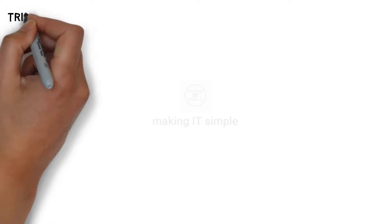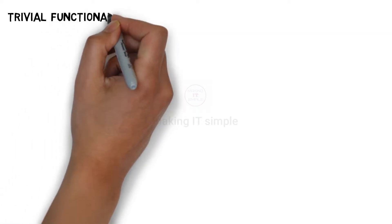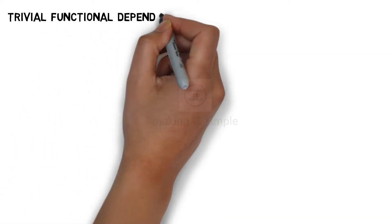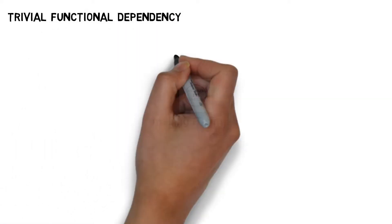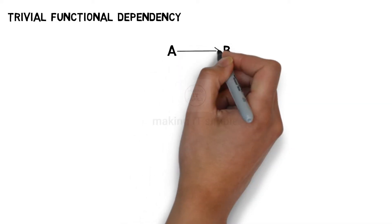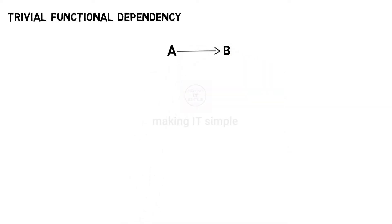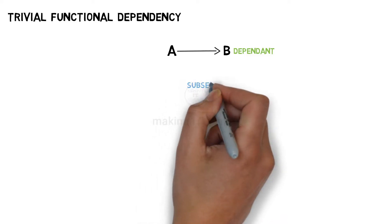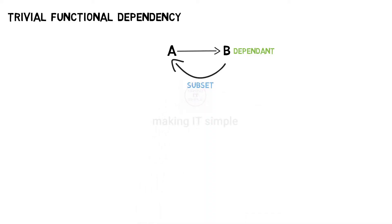Let us start with the first type: Trivial Functional Dependency. Consider a Functional Dependency A determines B. If the dependent B is a subset of the determinant A, then this dependency is a Trivial Functional Dependency.